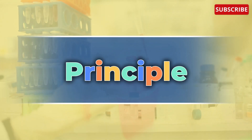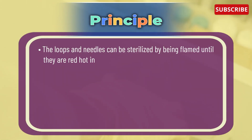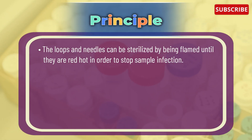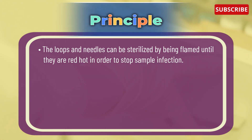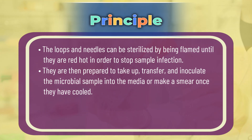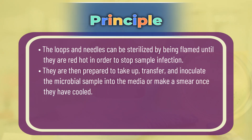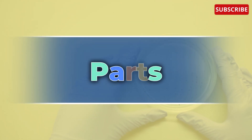Let's see the principle of inoculating loops and needles. The loops and needles can be sterilized by being flamed until they are red hot in order to stop sample infection. They are then prepared to take up, transfer, and inoculate the microbial sample into the media or make a smear once they have cooled.